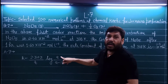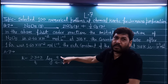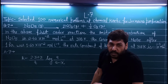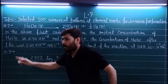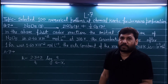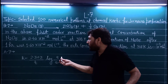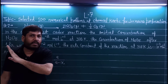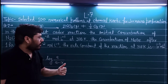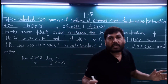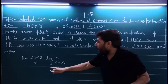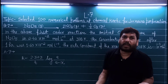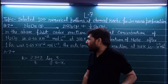In the log term, 'a' means the initial concentration of the reactant, and (a minus x) means the final concentration after 1 hour. There is no need to be confused here — initial concentration is given, final concentration is given, and time is given. We just need to calculate k by substituting the values.